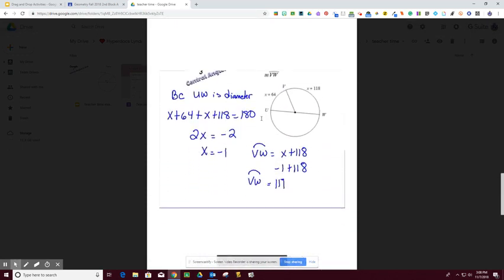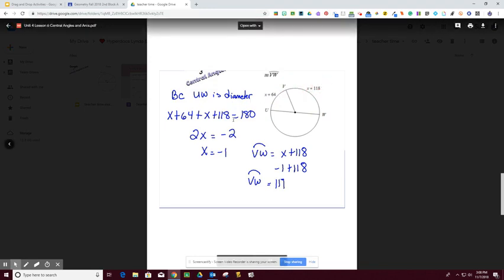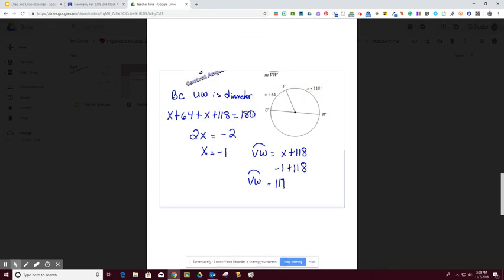In the next example, segment UW is a chord, and it's a special chord called a diameter. A diameter breaks the circle in half. If a circle equals 360 degrees, the diameter divides it into 180 degrees. So UW is a diameter, which means X + 6 + X + 118 = 180. Combining my X terms and solving this linear equation gives X = -1. But that's not the answer, because the question asks for the measure of arc VW. Arc VW is represented by X + 18, so -1 + 18 means the arc equals 117 degrees.